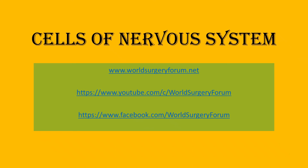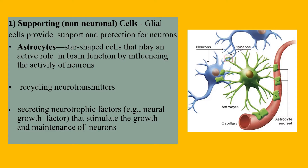Hello friends, today we will be discussing the cells of the nervous system, starting with the supporting cells or the glial cells, which are the non-neuronal cells. Glial cells provide support and protection for neurons.